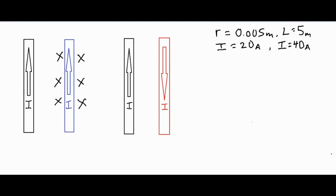Now we're going to do that the other way around. If we have our thumb going upwards for the blue wire, our fingertips are going to curl into the screen and then come out the other way, so the black wire is going to experience an outward magnetic field coming out of the screen.